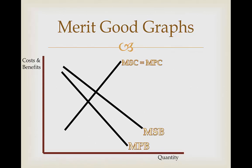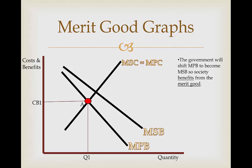Here we have a positive consumption externality graph in front of us. We can know this because the marginal social benefit is greater than that of the marginal private benefit. Currently we're operating at point A, but this is a merit good graph and we want to get to MSB. With this merit good, it's being under-consumed. We know this because we are not currently at MSB, the marginal social benefit — the full benefit we get from consuming these merit goods. So the government will want to shift MPB to become MSB, so that society benefits from the merit good.